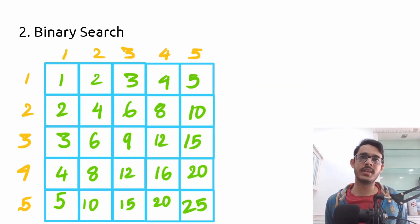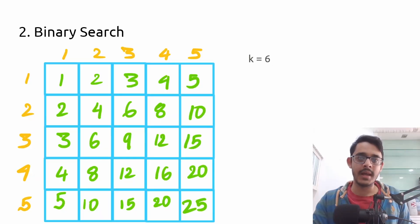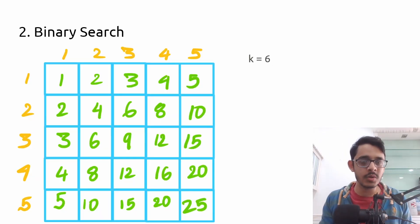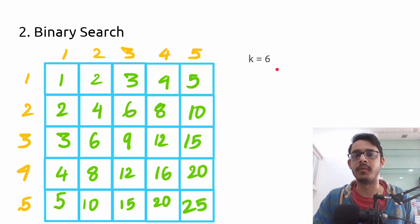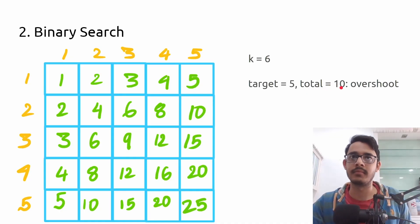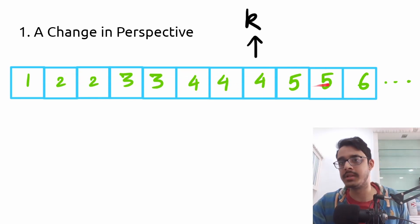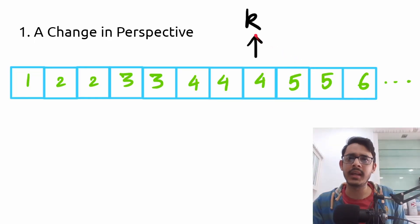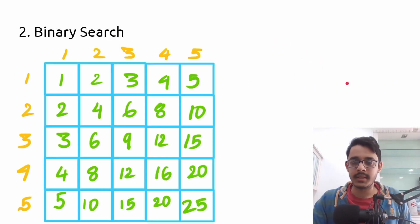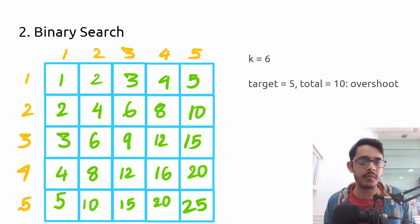Now let's understand how binary search comes into play. Say k=6 and we're working with a 5×5 grid. For target=5, the total count of numbers ≤ 5 is 10, which is greater than k=6. This means target=5 is overshooting — k is somewhere before 5. Any number greater than or equal to 5 would also give a count ≥ 10, so we want something smaller.